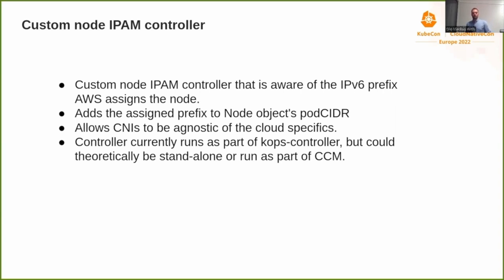We had to create something that was aware of the prefixes that AWS would assign to the instances. By default, there's a controller that looks at the whole cluster-wide CIDR and takes a subnet from that big CIDR and assigns it to each of the new nodes. That wouldn't work since the node CIDR has to match the prefix assigned to the instance. So we had to disable that default controller and create our own controller that was aware of the prefix that AWS assigned, and that patched the corresponding node object, giving it that prefix as its pod CIDR.